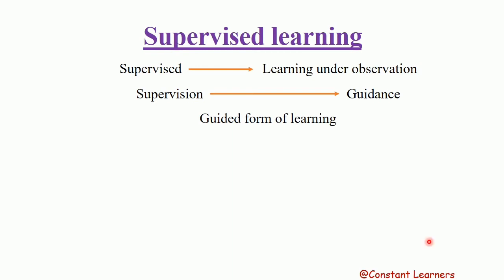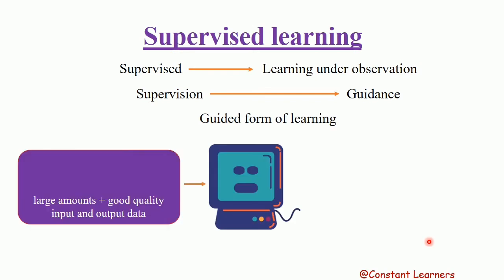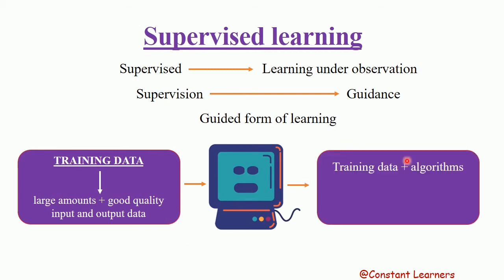In supervised learning, the machine is fed with large amounts of good quality data. This data should include both input and output — what the input should be and what the outcome or result should be. This data is known as the training data. The machine, with the help of this training data and some algorithm, creates a model.